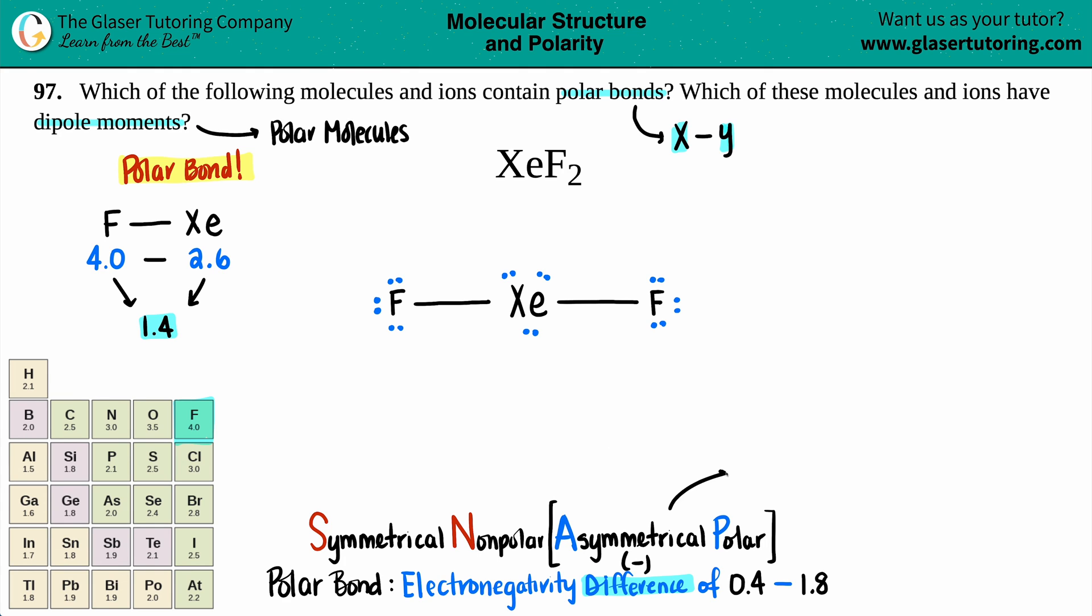Now there's one quick trick to always get down because it's going to make it so much easier. Just know that if your central atom has lone electrons, so you're looking at the dots, it is automatically always going to be polar.